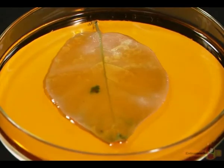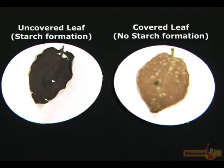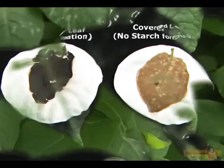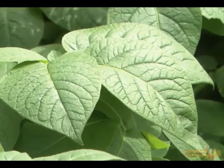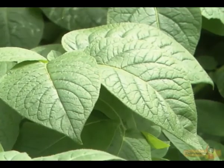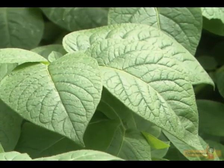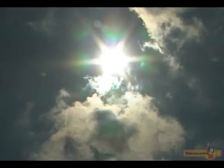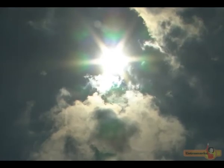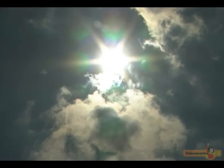Since the covered leaf did not receive sunlight, no starch is formed in it. So, it is inferred that the plant manufactures starch in the presence of sunlight by the process of photosynthesis.